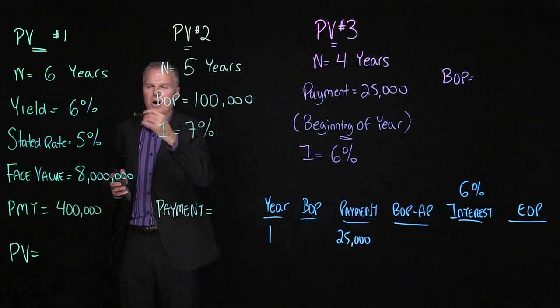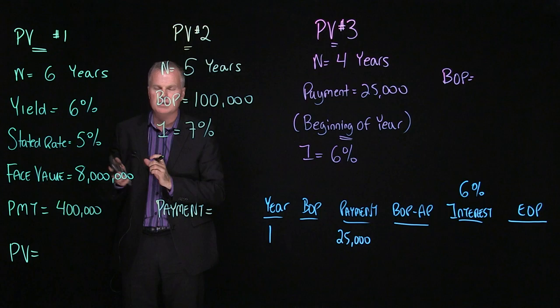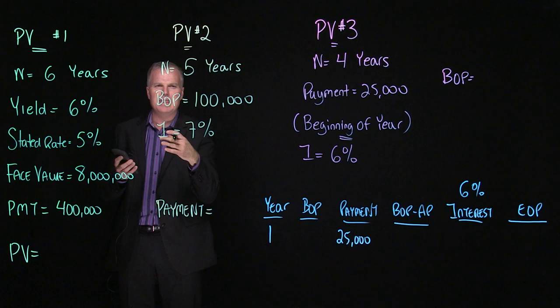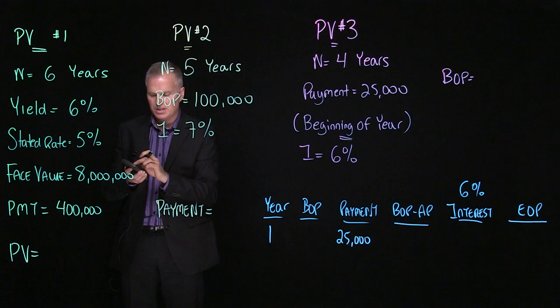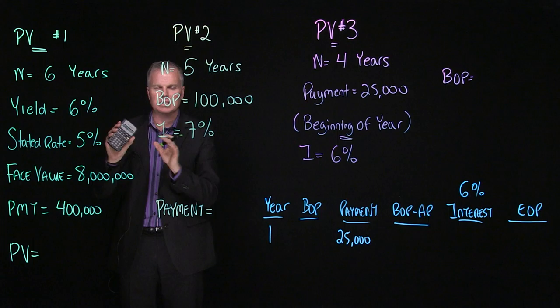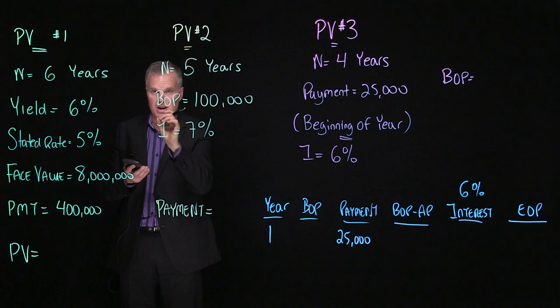We now have our information to calculate our present value. I'm going to use a BA2 plus Texas Instrument calculator to calculate my present value. Couple things—you want to make sure your calculator is clear, that nothing is in there from previous calculations. So I like to hit the second button, that top yellow button, and I like to hit the FV clear button, which says clear TVM, and I like to just hit that a couple times to make sure my calculator is clear.